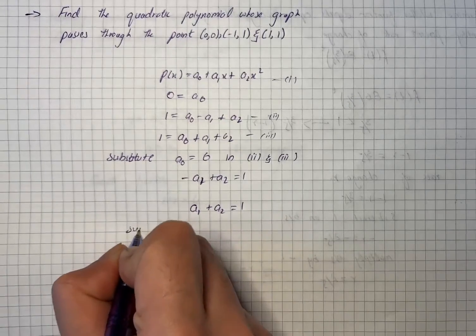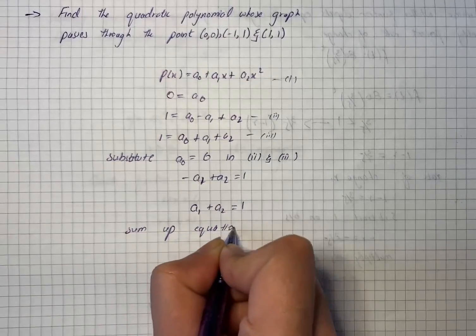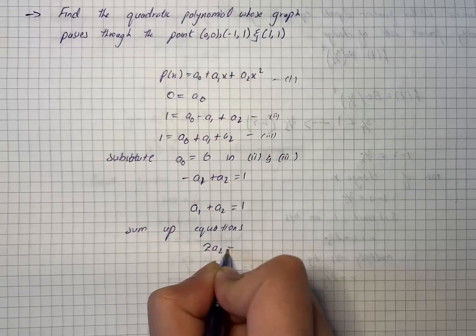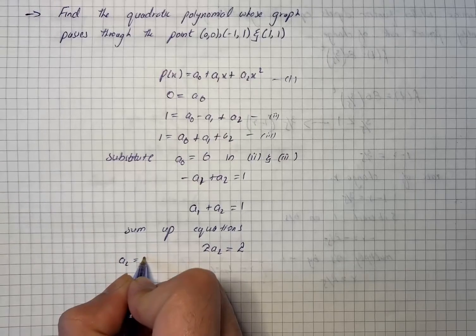And then a1 plus a2 is equal to 1. We will sum up the equations. This will give us 2a2 is equal to 2.